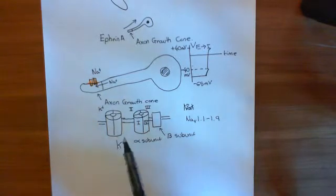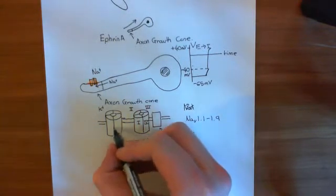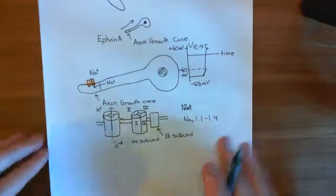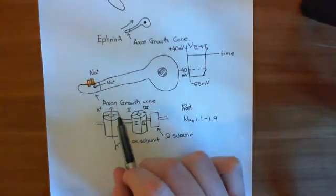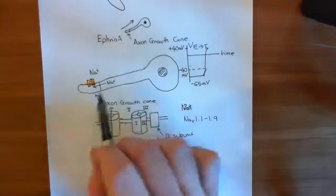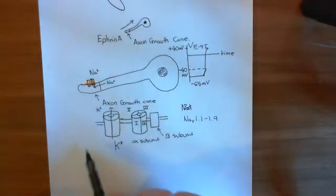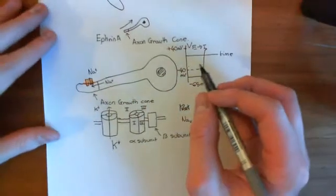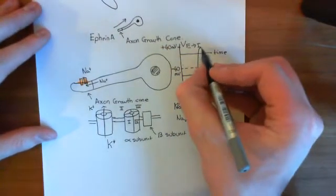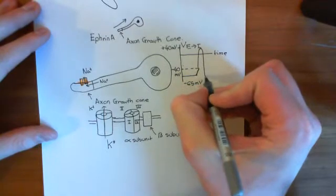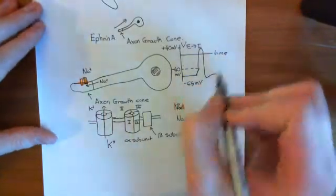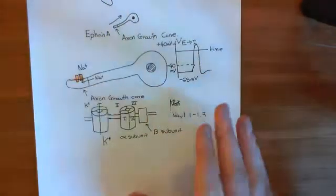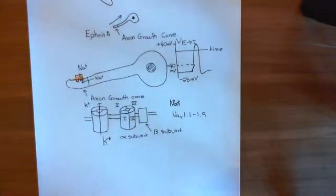These potassium channels start opening and they allow potassium ions to move out. You get potassium current going out of the cell — that's moving positive charge out of the cell. So it's going to raise the electrical potential of the extracellular compartment, lower the electrical potential of the intracellular compartment, and therefore repolarise the membrane, making the electrical potential difference more negative. You get the usual action potential happening across this membrane.